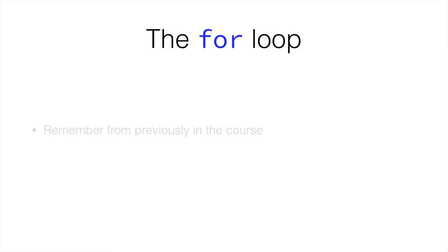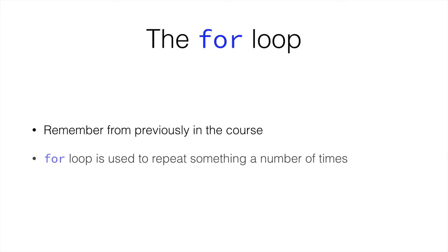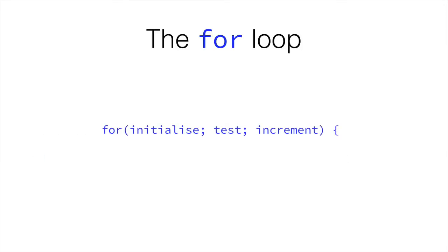If you remember from previously in the course, we studied the for loop. A for loop is used to repeat something a number of times. Let's remember how the for loop was programmed. We have the initialization, for example, int i equals 0. Then the test, such as i is less than 5. And then the increment that happens at the end, such as i++, which increases i by 1. Then we do something, and then we close the for loop.